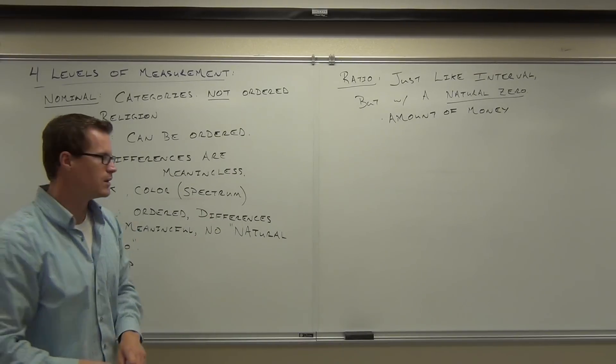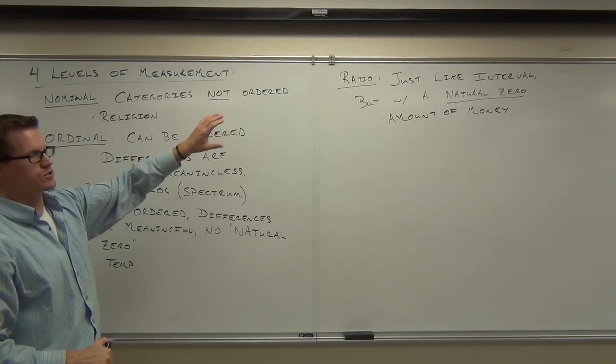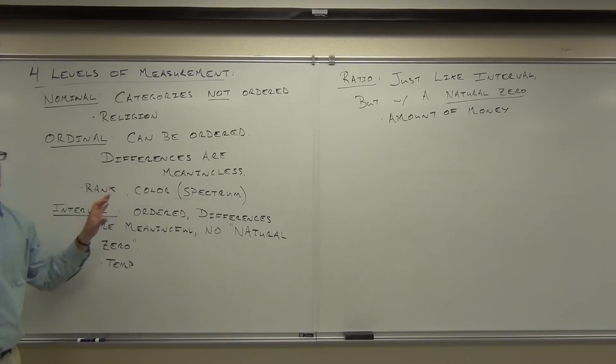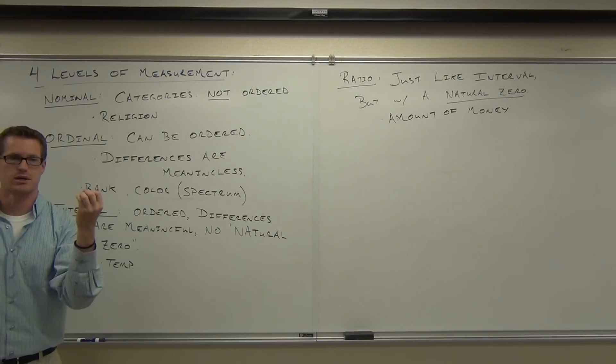It just means, well, it could be on a scale. This is a lot of times scale-based. And then our ratio is just like the interval. Order, differences are meaningful. We just happen to have a natural zero, where zero means there is nothing of that category or value anymore. How many people feel pretty good about the four categories or the four measurements that we're talking about?